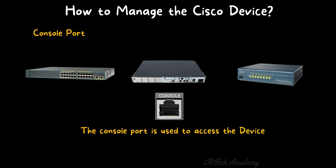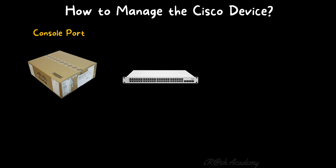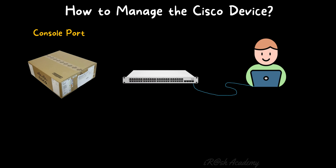The console port is used to access the device physically. When we purchase a brand new network device — whether a switch, router, or any other kind — that device is empty with no configuration; it will have only some basic default configuration from the manufacturer. We as end users need to configure and tune the device as per our requirement. To do the initial configuration, you need to connect your laptop to the device and get console access, then configure the initial setup: setting the hostname, providing an IP address, enabling remote access, etc.